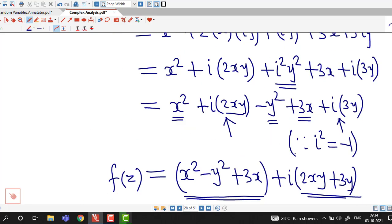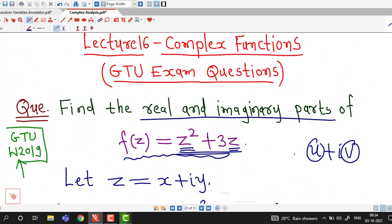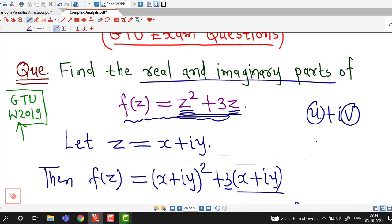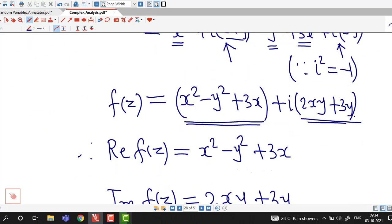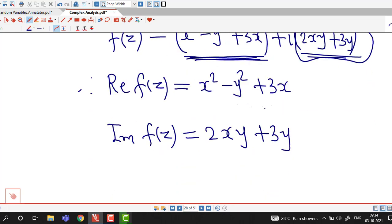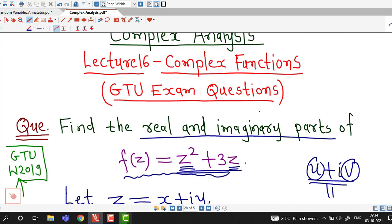In this way we can decide real and imaginary parts of any complex function. All we have to do is write our function f of z in this form: something plus i into something. The part independent of i is the real part, and the part multiplied with i is the imaginary part.